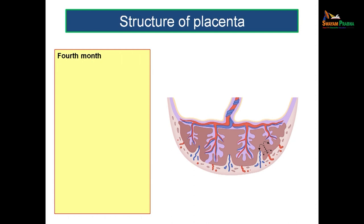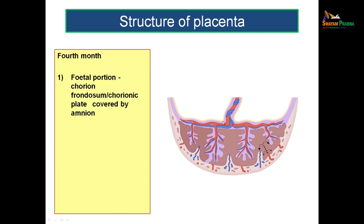During the fourth month of intrauterine period, this is how the placenta looks. The fetal portion — the easiest way to identify it is to look at the umbilical cord. The surface to which the umbilical cord is attached is the fetal portion of the placenta. This is otherwise known as chorion frondosum and is covered by the amnion.